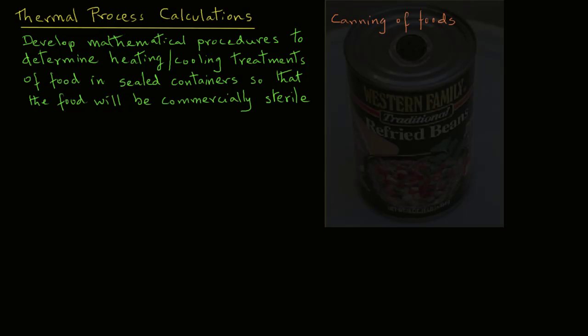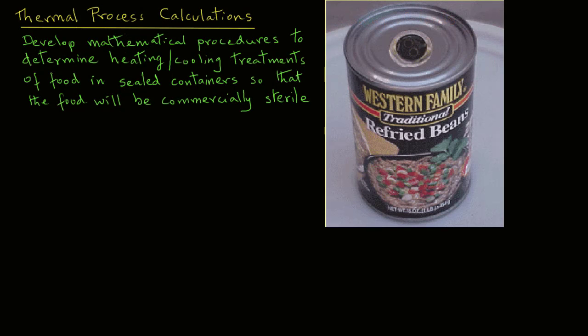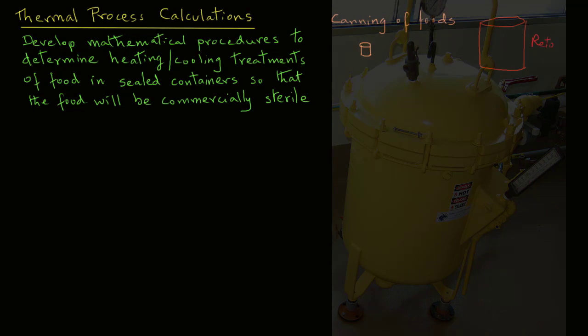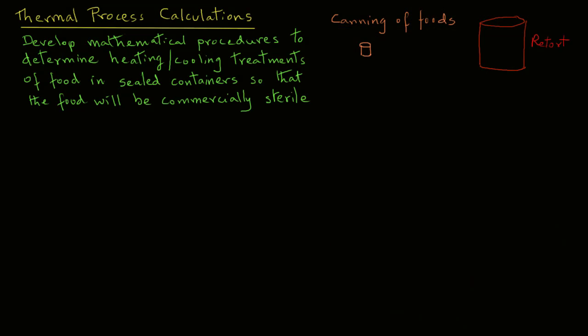We have some type of container, the most typical is a can or it could also be a glass bottle. We place food in the can and seal the can, then place that can in a chamber where we can give it heat treatment. This chamber is often called a retort. Quite often we use steam to heat the cans that are placed inside the retort.